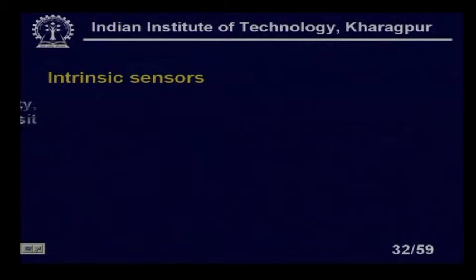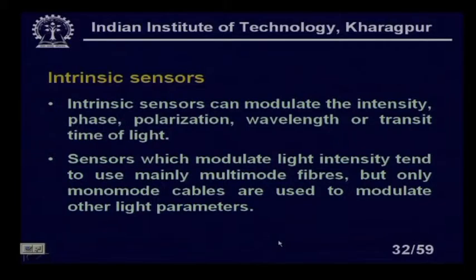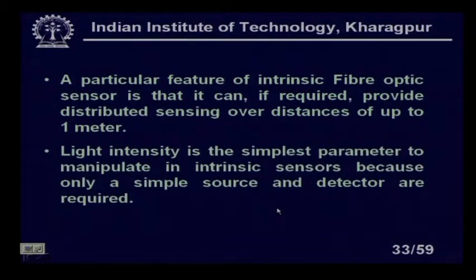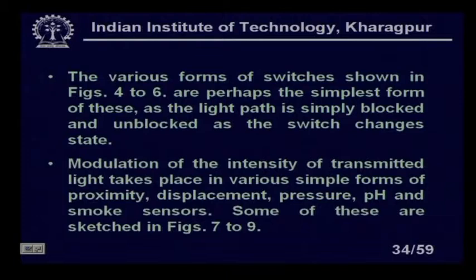Intrinsic sensors can modulate the intensity, phase, polarization, wavelength, or transit time of light. Sensors which modulate light intensity tend to use mainly multimode fibers, but only monomode cables are used to modulate other light parameters. A particular feature of intrinsic fiber optic sensors is that they can provide distributed sensing over distances up to one meter. Light intensity is the simplest parameter to manipulate, as only a simple source and detector are required.